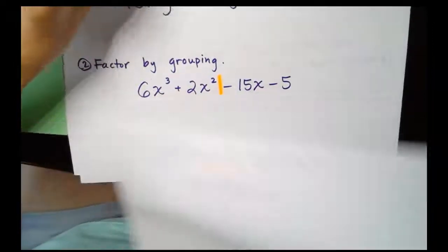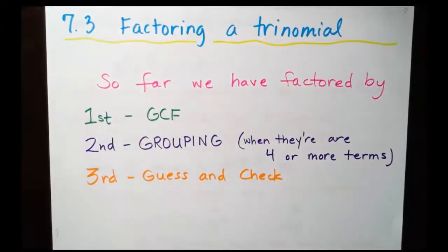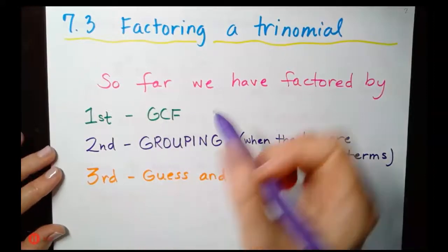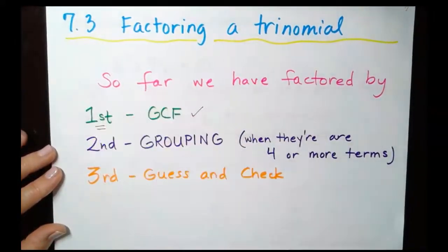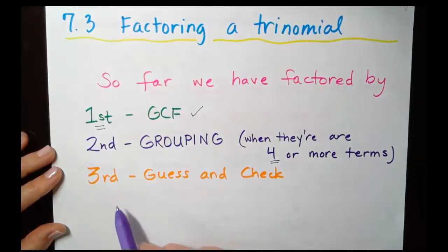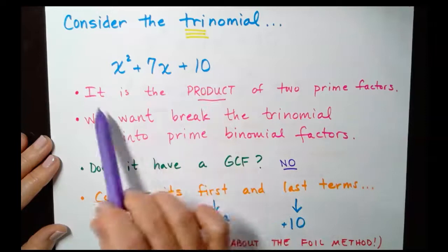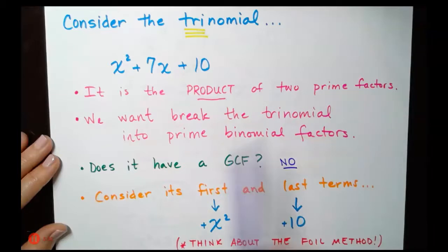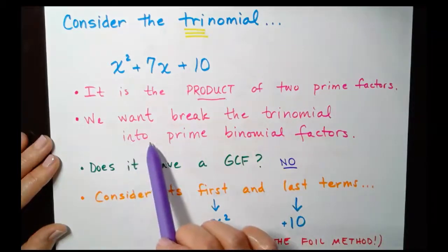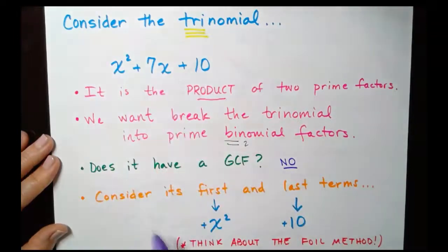Let's move on into the lesson. The lesson is all about factoring a trinomial — trinomial means three terms. So far we've factored by taking out the greatest common factor, which we will always look for first. Second, we can factor by grouping when there are four or more terms. The third factoring strategy is guessing and checking, and that's what we're going to look at in this video. Consider the trinomial x² + 7x + 10. Does this have a GCF? No, there is no greatest common factor of all three terms.